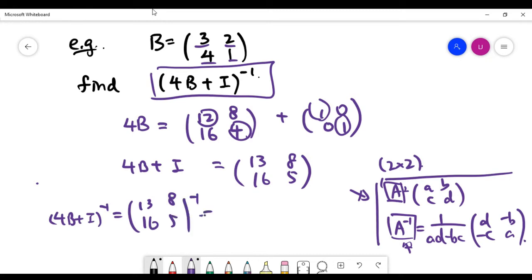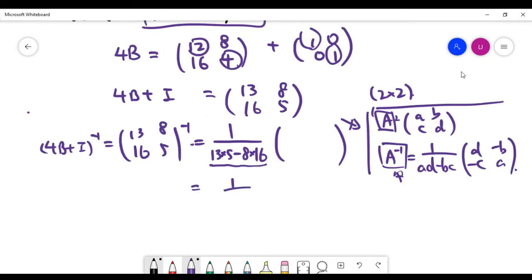Let's find the inverse of such a matrix now. Let me write it down again for this line. Basically, we'll apply the formula ad minus bc. You see this scalar part is gonna be 1 over minus 63, I think.